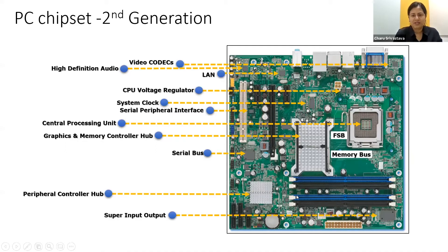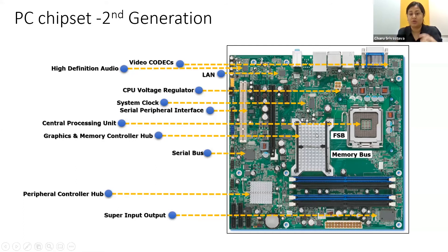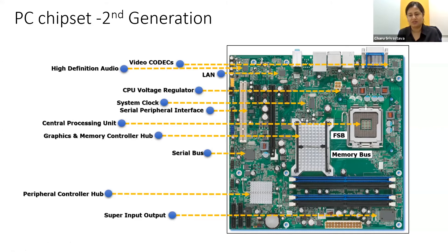I'd like to take you back 10 years ago when I joined Intel. We were releasing the second generation of PCs based on the 32 nanometer process design, codenamed Sandy Bridge. What you see on the image is a motherboard with many physically visible components — the video codec, a central processing unit attached to a north bridge and a south bridge. The north bridge is your graphics and memory controller hub, housing high performance compute components. The south bridge is the peripheral controller hub — PCH — containing all inputs and outputs: LAN, USB, and sensors.